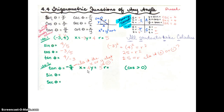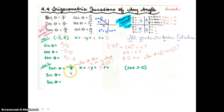We were working on section 4, 4a, picking back up with example number two. In example number two, we were told tangent was equal to negative 5 fourths and cosine was greater than zero, and they wanted us to find the sine and the secant.